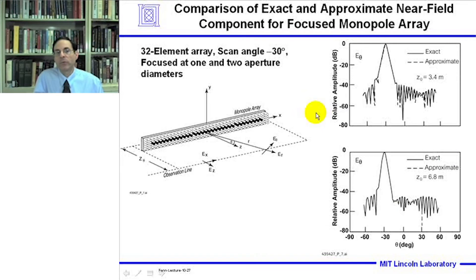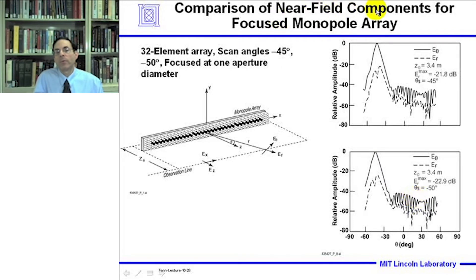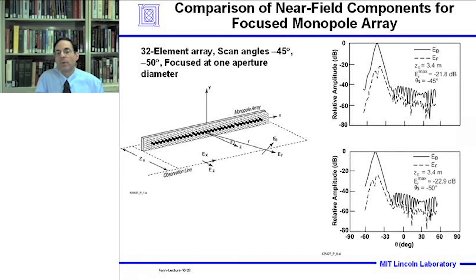This slide shows a comparison of exact and approximate near-field components for the focused monopole array, scanning the beam to minus 30 degrees and focusing at one or two aperture diameters. The approximate calculation assumes the radial component is negligible, whereas the exact calculation takes into account the actual radial field component. At both one and two aperture diameters, the exact and approximate calculated patterns are very similar. Comparing near-field components when scanning to minus 45 and 50 degrees at one aperture diameter focal distance, the radial component remains below 20 dB for both scan angles. We can conclude that the radial component of the electric field of a monopole array is negligible in the focus near-field region.